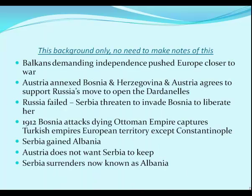The balance of power was the key thing to watch. The Balkans were demanding independence and pushing Europe closer to war because Austria annexed Bosnia and Herzegovina. Austria agreed to support Russia's move to open the Dardanelles and give her a warm water port, but Russia failed to achieve her objective. Serbia threatened to invade Bosnia to liberate it. In 1912 Bosnia attacked the dying Ottoman Empire, capturing its European territory except Constantinople, and Serbia gained Albania — but Austria said no and forced Serbia to surrender what we now know as Albania.